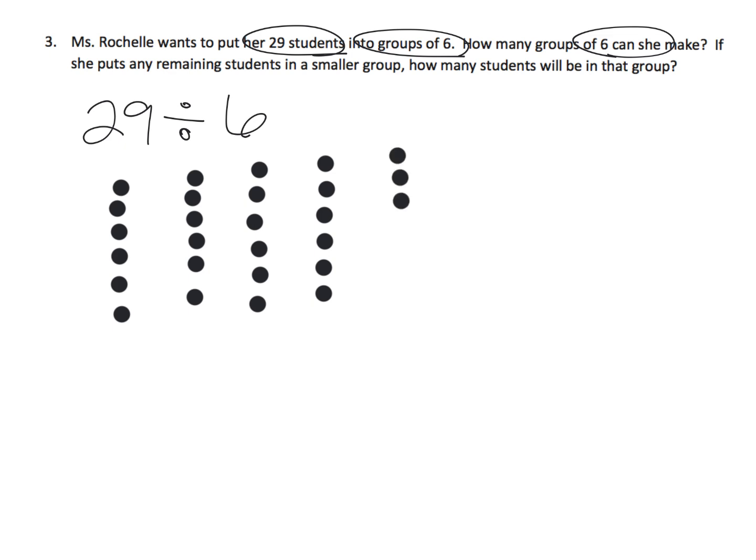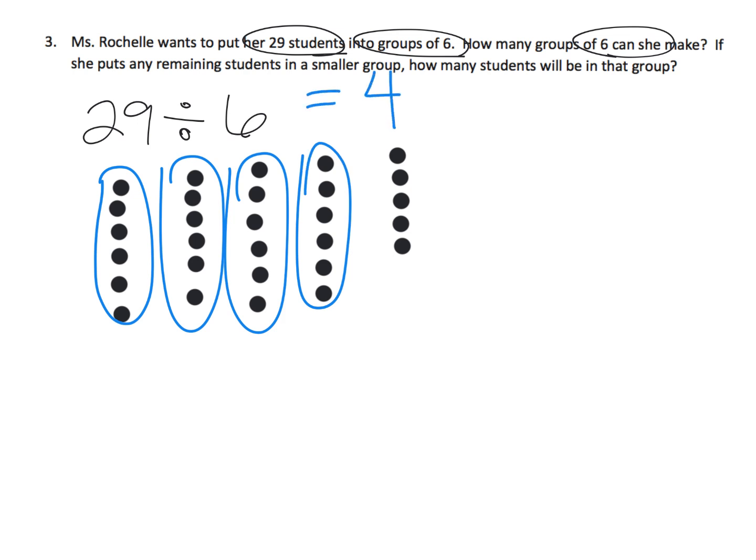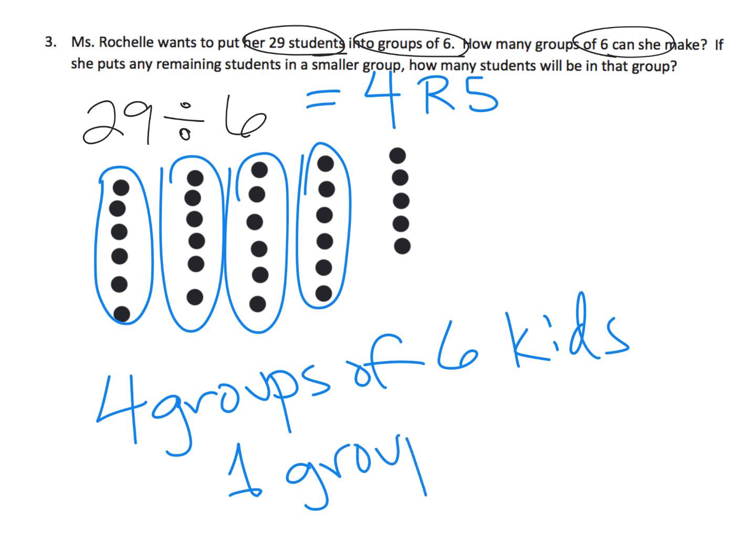25, 26, 27, 28, 29. That's not quite a whole group. So what have we done? Well, we've got one group, 2, 3, 4 groups. So her answer is 4 with a remainder of 5. So if she puts the remaining, so how many groups can she make? She can make 4 groups of 6 kids. And then the remaining is 1 group of 5 that are left over.